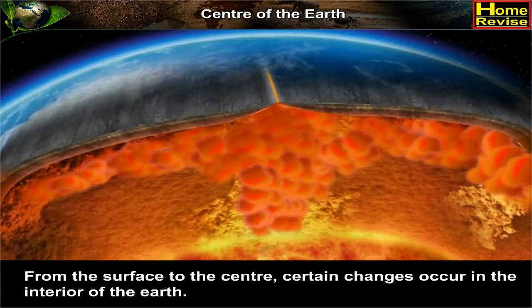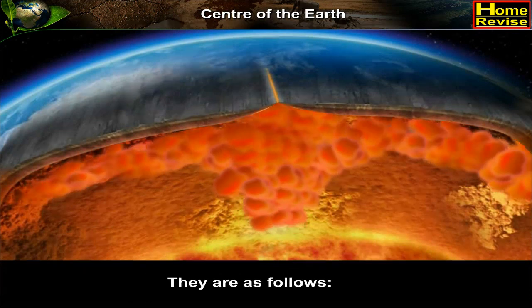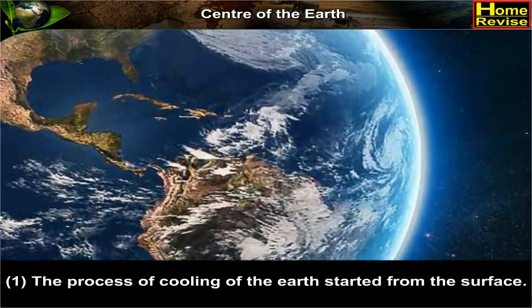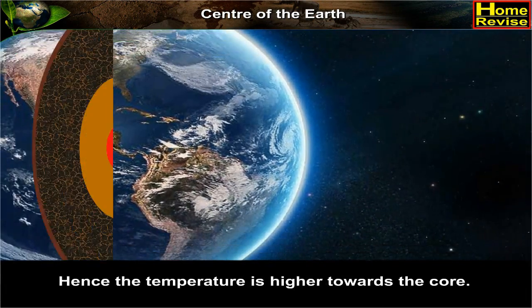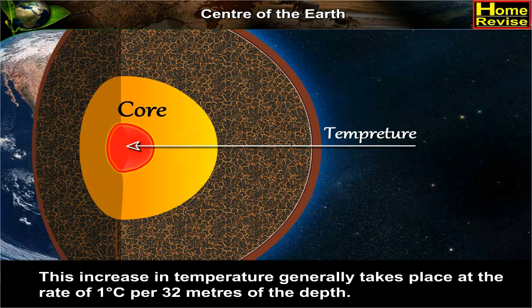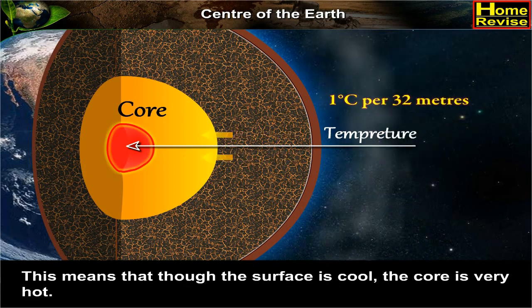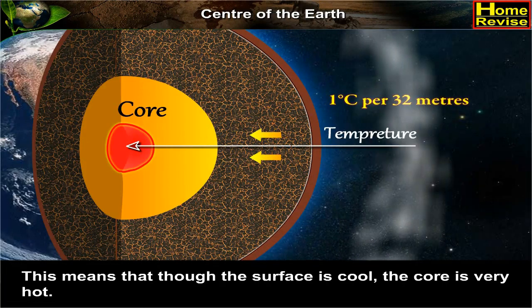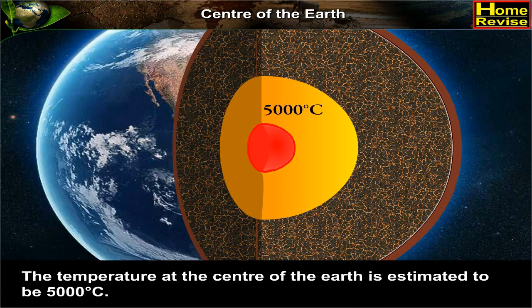From the surface to the center, certain changes occur in the interior of the earth. They are as follows: 1. The process of cooling of the earth started from the surface. Hence, the temperature is higher towards the core. This increase in temperature generally takes place at the rate of 1 degree Celsius per 32 meters of depth. This means that though the surface is cool, the core is very hot. The temperature at the center of the earth is estimated to be 5000 degrees Celsius.